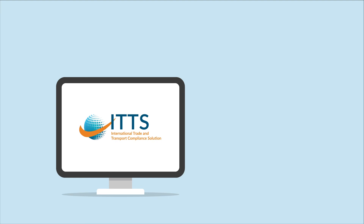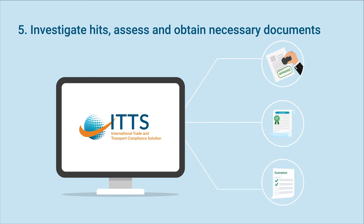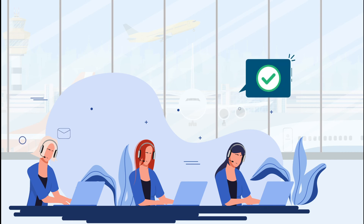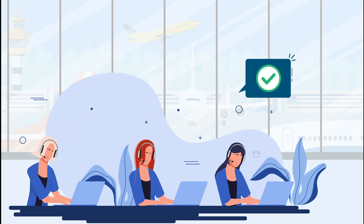ITTS enables airline operational staff and officials to investigate potential compliance issues, assess the shipments for compliance, and obtain the necessary approvals, licenses, or exemptions. Procedures for airline-specific approval can be configured to ensure internal procedures are followed. After all the necessary checks are conducted, ITTS will notify the requester and, if needed, the relevant authorities of the results of the compliance check.